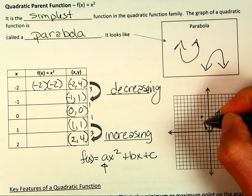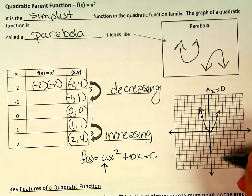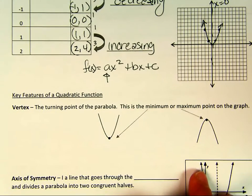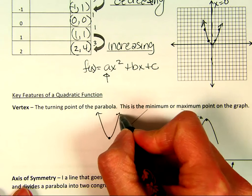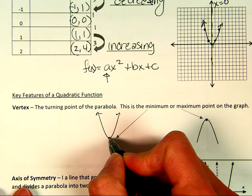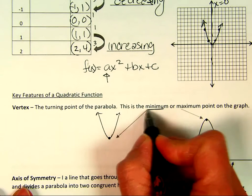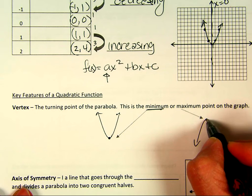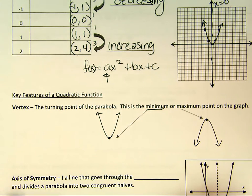Let's talk about some key features. The vertex is the turning point of the graph. Going from left to right, you go down to the turning point — the vertex — and then start going up again. When the parabola opens up, the vertex is called a minimum. If the parabola opens down, you go up to the vertex — which is the maximum, the high point — and then go down. So the vertex is always the minimum or maximum of the graph.